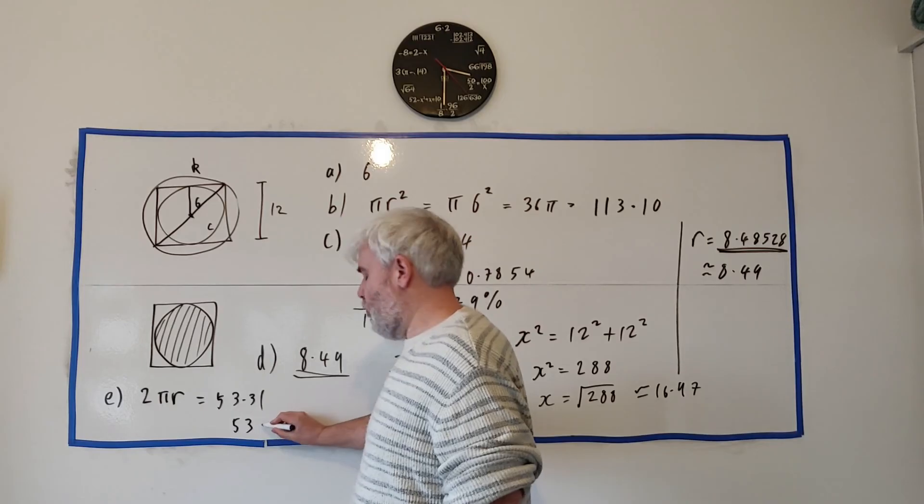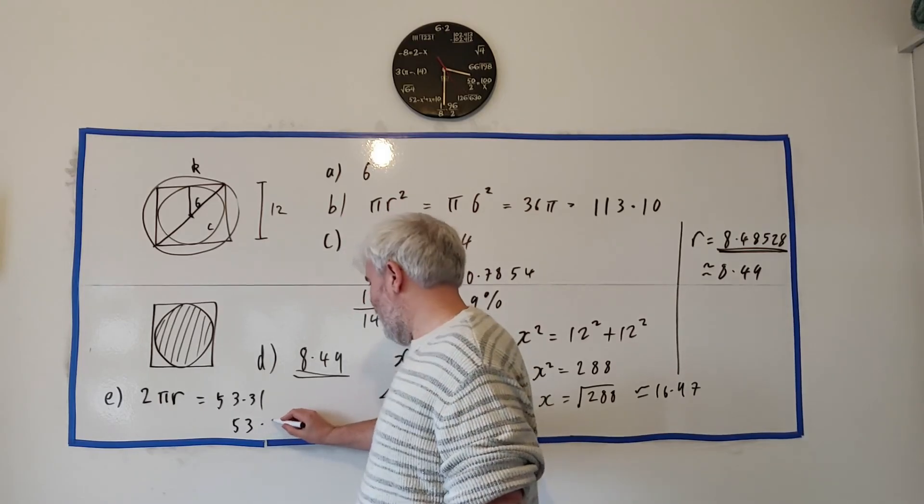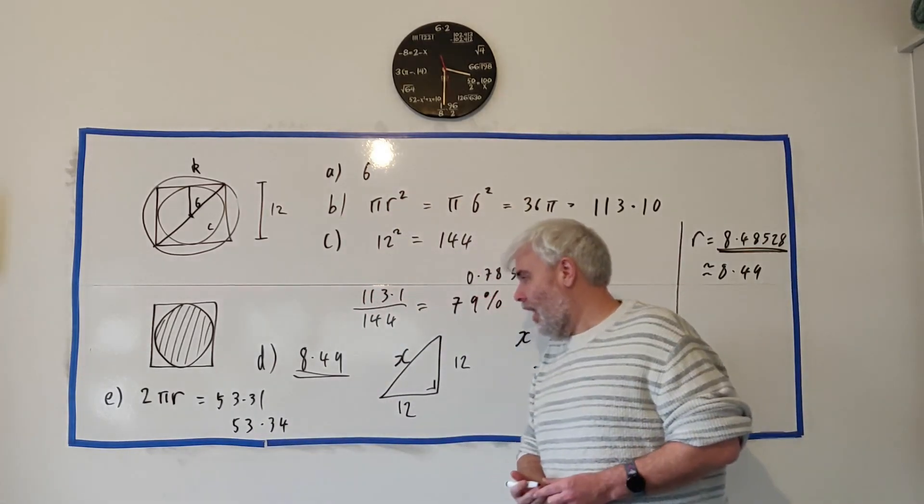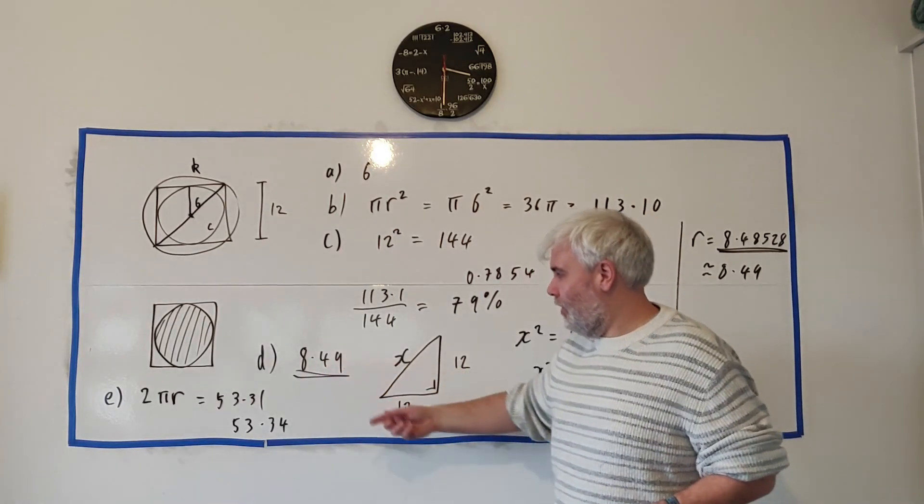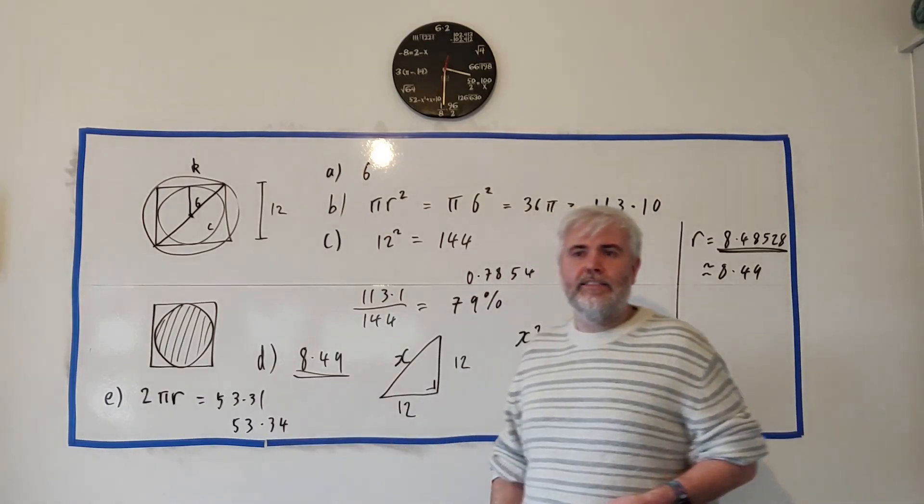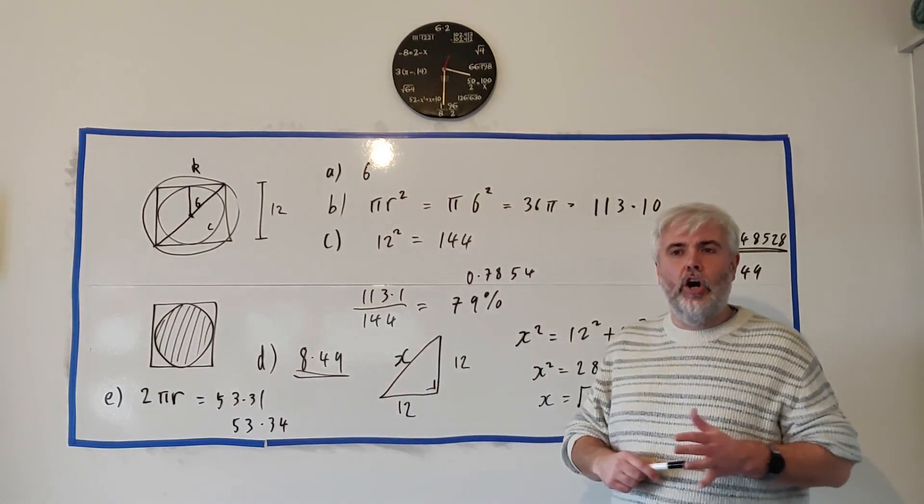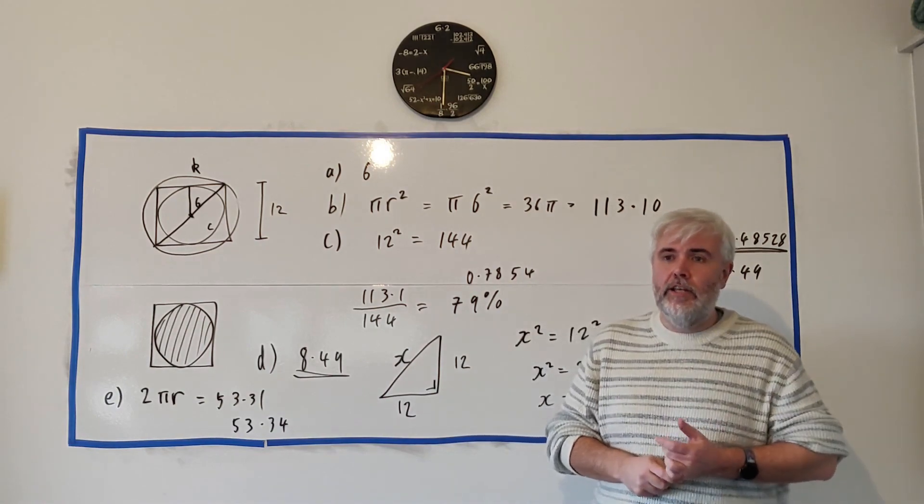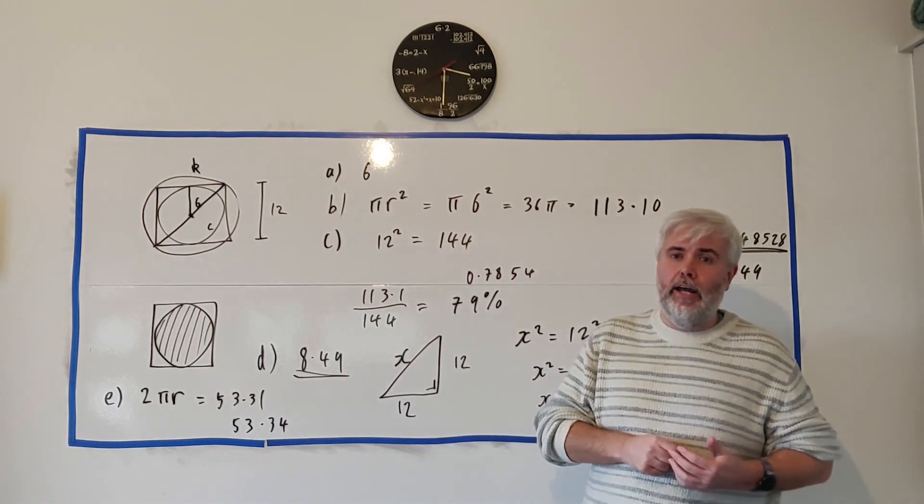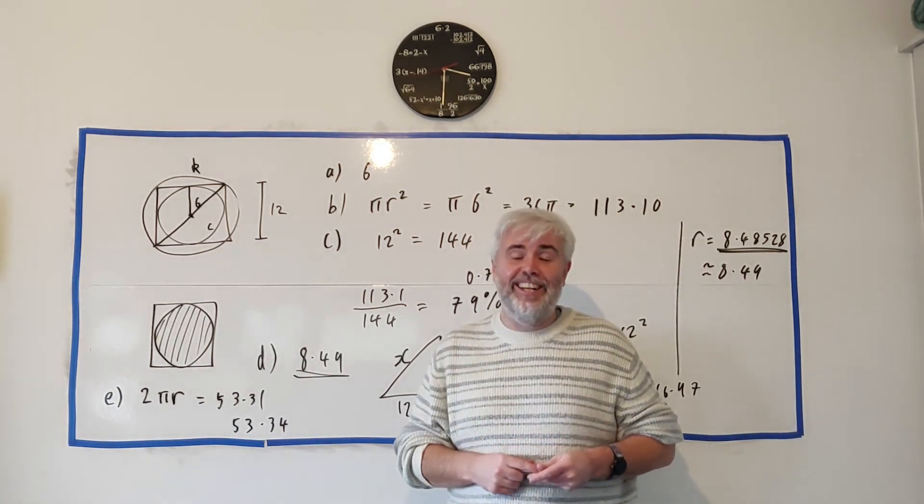There's the answer. I think the answer in the back of the book would be 53.34 or something like that. Again they just used this number, they shouldn't have, it's rounded off. The correct answer is this one here. Okay I hope that answers that question. If you have any follow-up questions put them in the comments below and good luck in your exam. I'll see you next time.